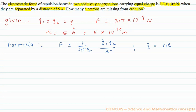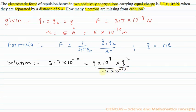Now we see the solution for this question. Force given is 3.7 × 10^-9. Value of 1/(4πε₀) is 9 × 10^9. Q₁ and Q₂ are equal, so we have Q² divided by (5 × 10^-10)² in the denominator.